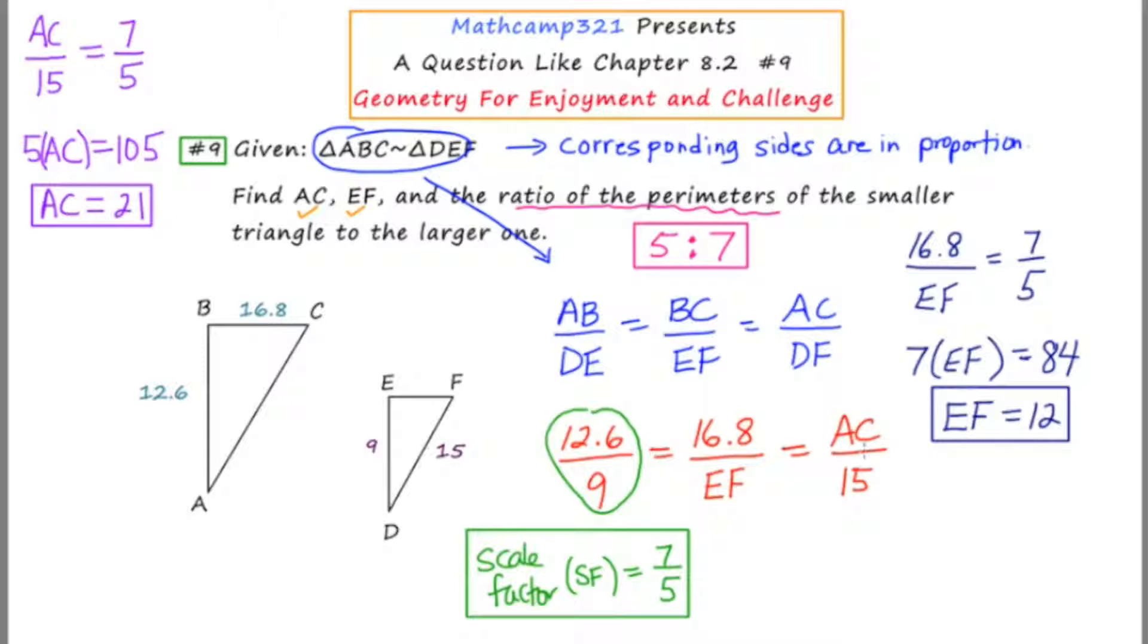So in summary, this problem involved similar triangles and the important concept that the corresponding sides are proportional or in proportion. We set up this proportion using the positioning of the letters, we plugged in the numbers, we determined the scale factor, and then we set up as many proportions as were needed to solve for the unknown things.